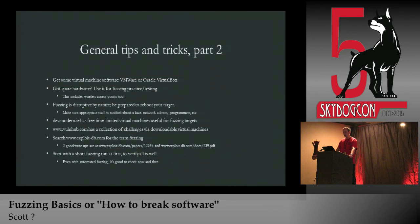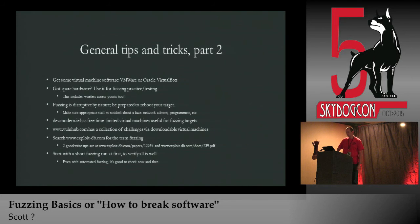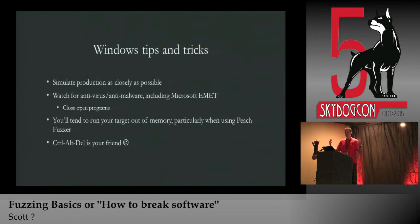Dev.modern.ie has some free time-limited virtual machines that are good for fuzzing targets. Hackthissite or HackTheBox has some challenges via downloadable virtual machines — not fuzzing specific, but you can use them to fuzz on. Exploit-db.com has some good write-ups on fuzzing. Start with a short fuzzing run first to make sure everything's good. With Peach on Windows, do a test run or run for a few iterations to make sure everything is working. Check it now and then even with automated fuzzing. For Windows, simulate your production environment as closely as possible.